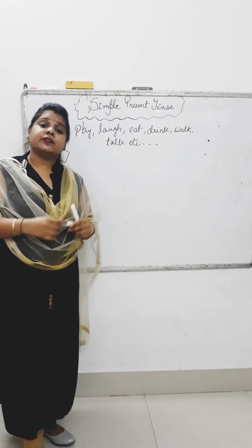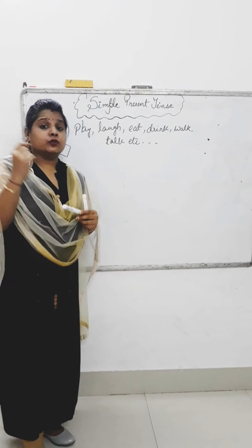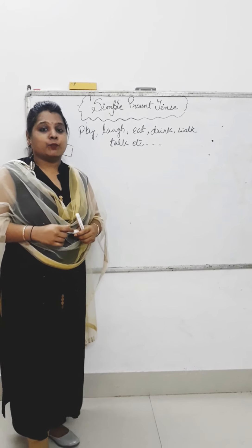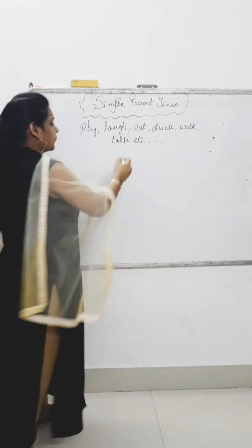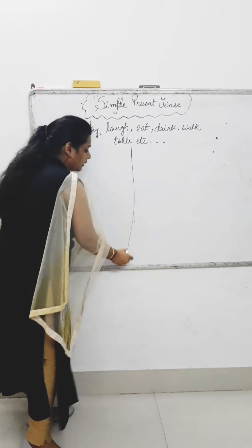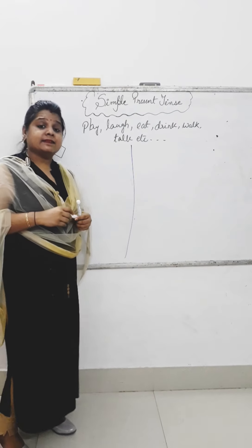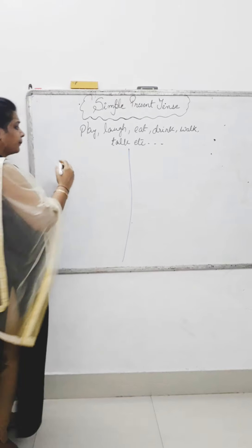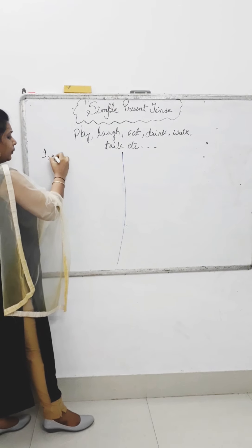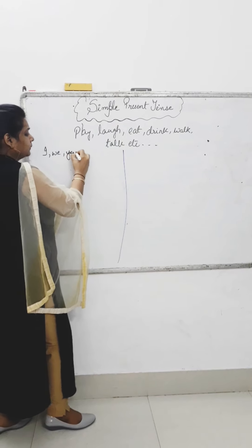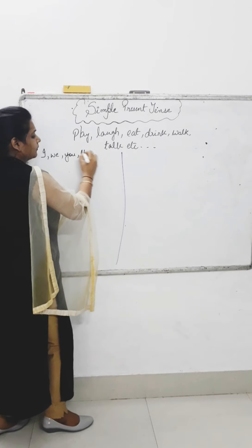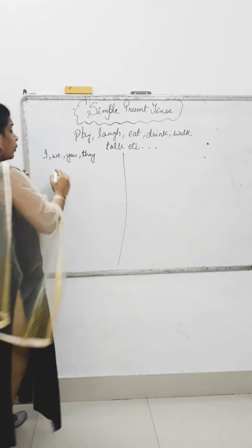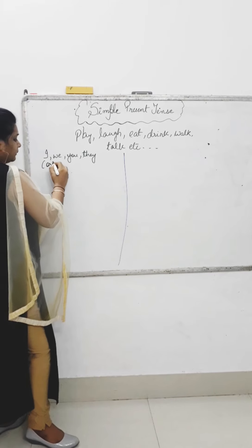But there is a general rule which you have to follow. For that, I have to divide the board into two parts. Children, when a sentence begins with the subject like I, we, you, or they, then we will use the original form of the word.